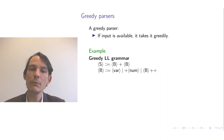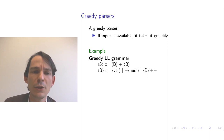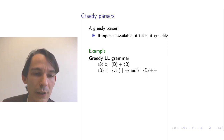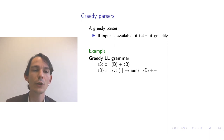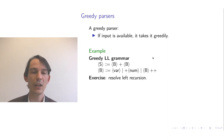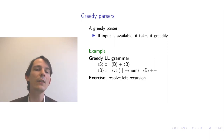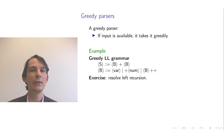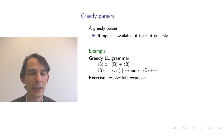A greedy LL grammar satisfies: no left recursion, the property that you can always make a choice between alternatives based on first sets, and by making it greedy, we resolve the determinism problem — we prefer one derivation over the other so there is no ambiguity. Note there is still the rule B which has a non-terminal B in one of its alternatives (direct left recursion) — as an exercise, you can remove this using the technique described earlier.